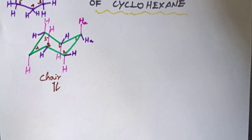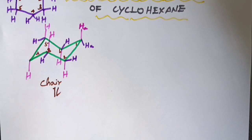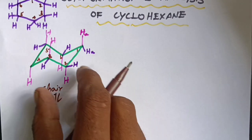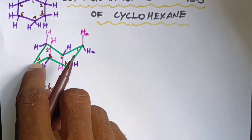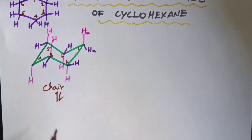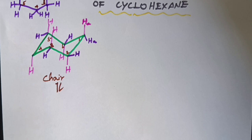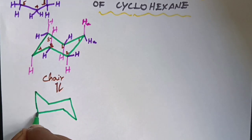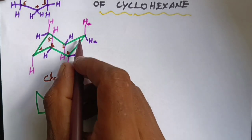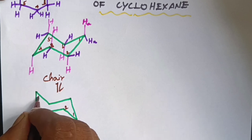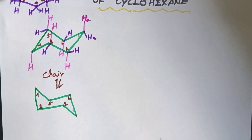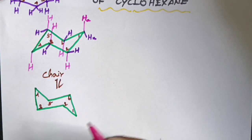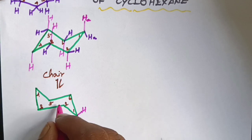Another chair conformation can be drawn by a ring flip. When the ring flips, the carbon positions change. Carbons 1, 4, and the top positions, and carbons 2, 3, 5, and 6 also change positions during the ring flip.